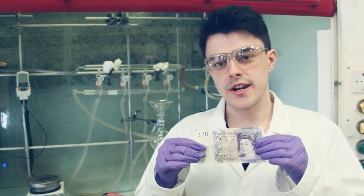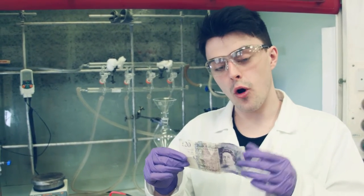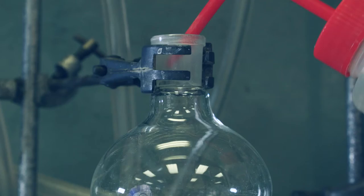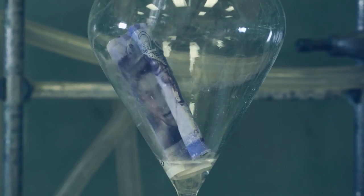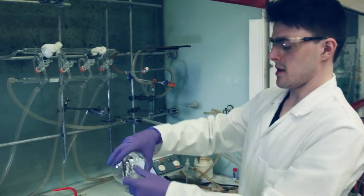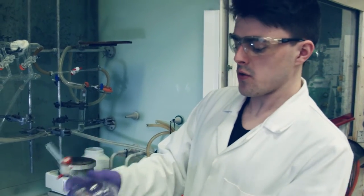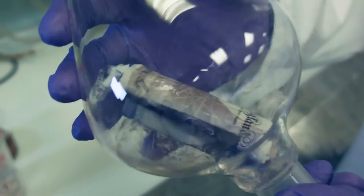We can't put the note directly into the spectrometer, so we need to extract all the organic material off the note. The first step in doing this is washing it with acetone. Sorry Queenie, it's time to get wet. This is a separatory funnel. It's important to shake it quite vigorously, just to get all the acetone into the note so that all the organic material dissolves.